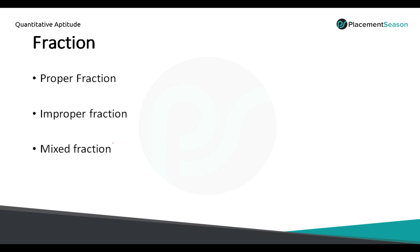In general, we represent a fraction in 3 different types. A proper fraction means the numerator value is lower than the denominator — for example, 1/2, 3/4, or 5/6. In all these cases the numerator is lower than the denominator: 3 is less than 4, 5 is less than 6. So if you get a fraction like this, it is called a proper fraction. An improper fraction means the numerator value is higher than the denominator, for example 13/10 or 15/13.